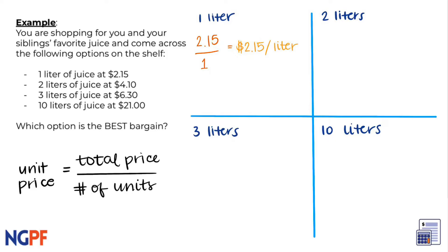For two liters of juice, we can put the total price of $4.10 on the top and divide by two liters. This will give us a unit price of $2.05 per liter.